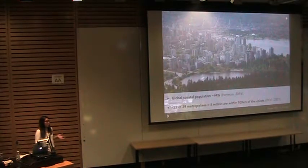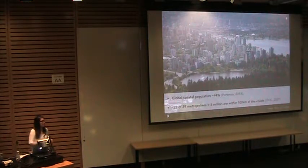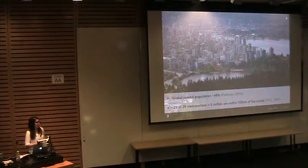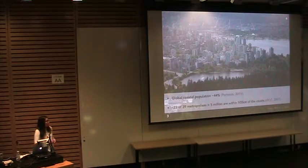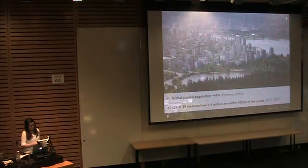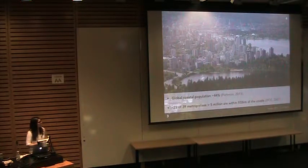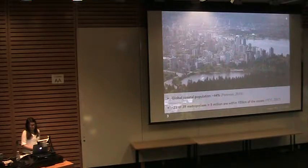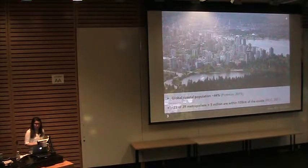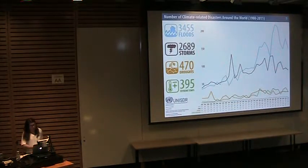Even though they are inherently extremely vulnerable to coastal natural hazards such as tsunami, storm surges, or strong wave action, coastal areas have always been important social and economic hubs throughout our history. It's not surprising that as of 2014, approximately 44 percent of the global population reside around coastal areas, and most of the world's metropolitan areas are also located within 100 kilometers from the coastlines.